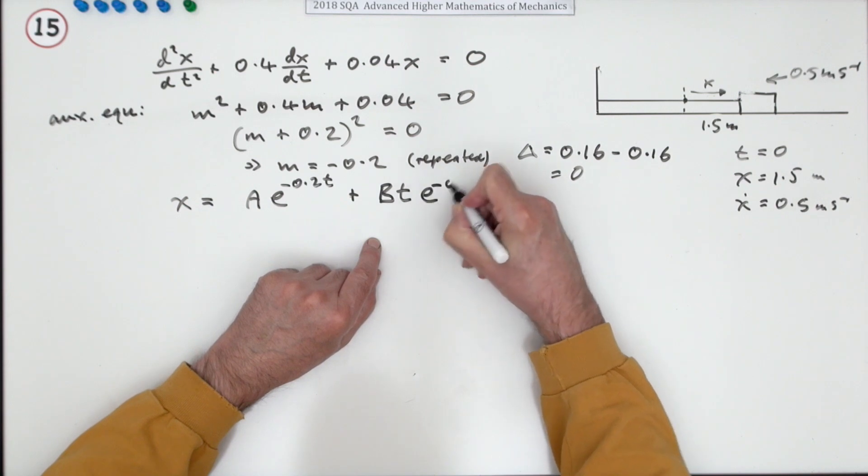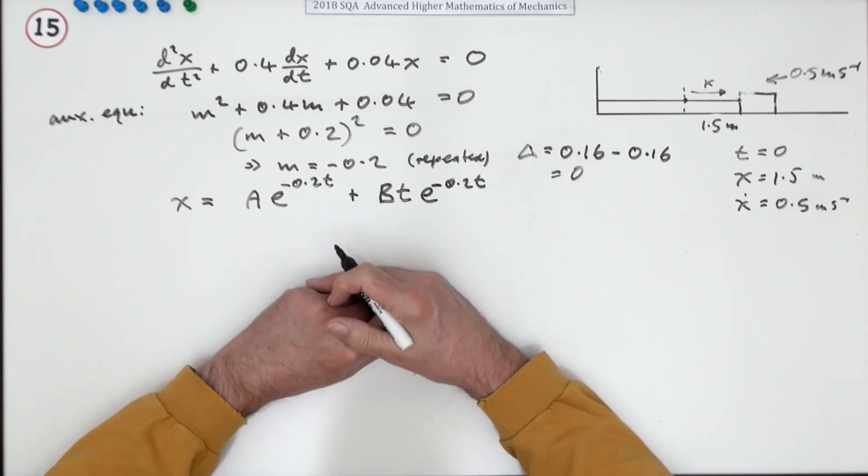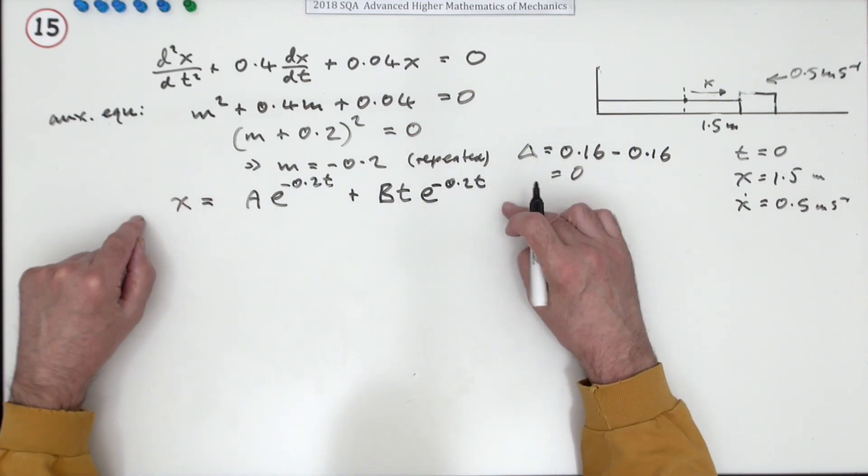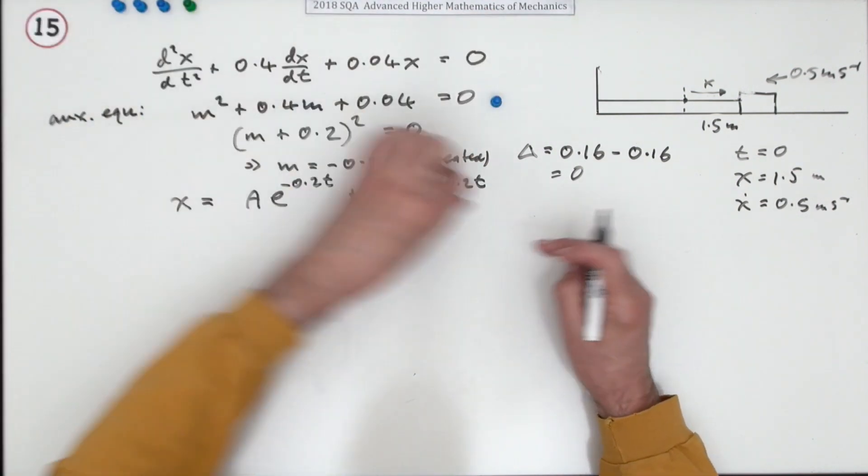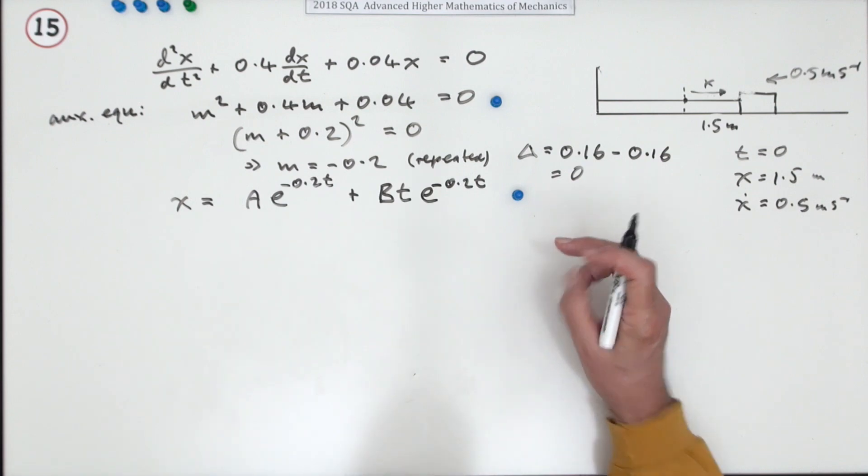So B times t times e to the negative 0.2t. Now doing that's two marks so far, because there was one mark for getting the auxiliary equation, there's another mark for ending up with this solution.